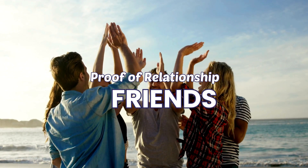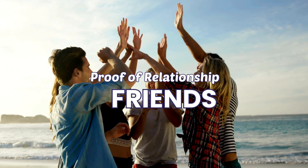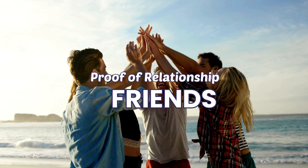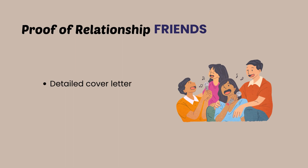And lastly, proof of relationship for friends. This is quite simple but also a bit difficult because there's no formal relationship — for example, both of you are girls or both of you are guys. You can write a letter explaining the details of your friendship, like how you met and how long you've known each other, as well as include photos together. Those are the different suggestions I can give you for proof of relationship for friends.